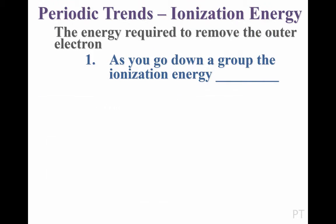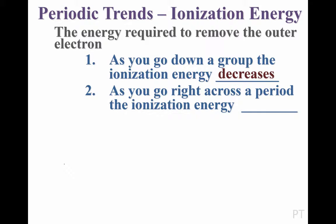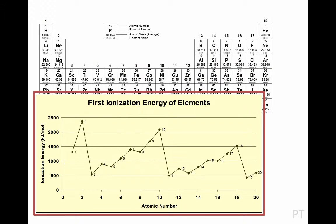So we'll say, as you move down a group, the ionization energy decreases. Now, how about as you go left to right across a period of the periodic table? Using a graph of ionization energy and our periodic table, let's see if we can find a pattern.